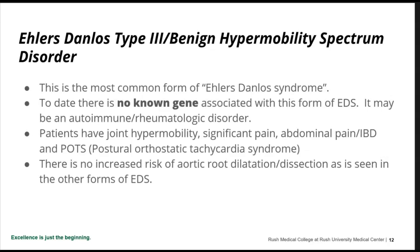The most common form of Ehlers-Danlos — when somebody comes in saying they have Ehlers-Danlos syndrome — is usually type 3, which we now call benign hypermobility spectrum disorder. To date, there's no known gene associated with this, and it may actually be an autoimmune or rheumatologic disorder. We've sequenced the entire human genome and this is very common — some claim between 1 in 100 and 1 in 1,000 individuals have this. Patients have joint hypermobility and usually a positive Beighton score, but they have significant pain.